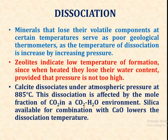Next is dissociation. Minerals that lose their volatile component at certain temperature serve as geological thermometers, as the temperature of dissociation is increased by increasing pressure. Zeolites indicate low temperature of formation since when heated they lose their water content, provided that pressure is not too high. Calcite dissociates under atmospheric pressure at 885 degrees Celsius. This dissociation is affected by the mole fraction of CO2 in a CO2-H2O environment, and silica available for combination with calcium oxide lowers the dissociation temperature.